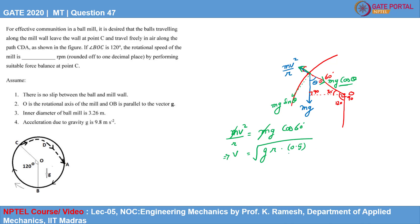What is R? R is the radius. Since the diameter is 3.26, it will be 3.26 divided by 2, that is the radius, into G into 0.5 under root, meters per second.